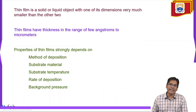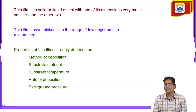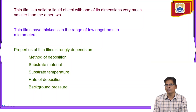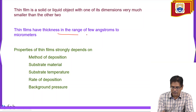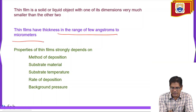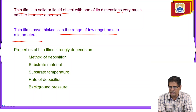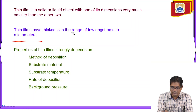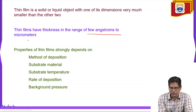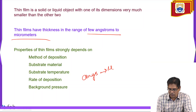In material science, a thin film is a solid or liquid object with one of its dimensions very much smaller than the other two. Thin films have thickness in the range of a few angstroms to micrometers.